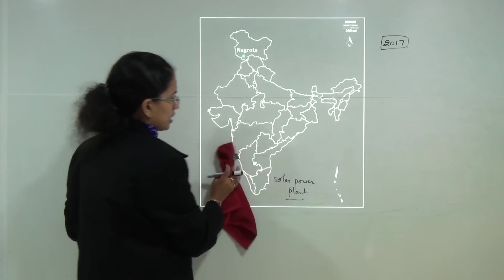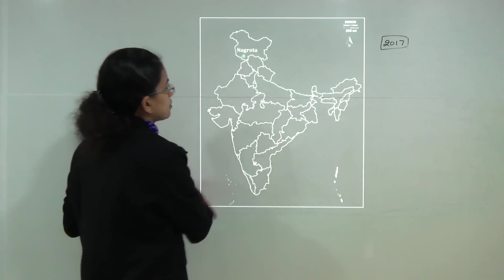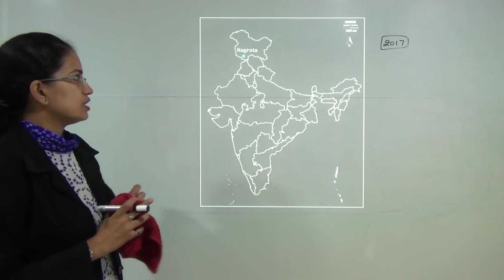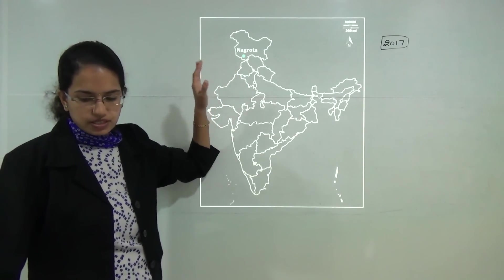Next, Nagrota. Nagrota lies in Jammu and Kashmir. It was recently in news because of the recent firing that opened up in Jammu and Kashmir.